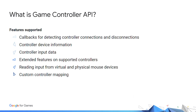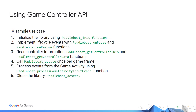What features are supported by the Game Controller API? It supports callbacks for detecting controller connections and disconnections. It supports getting controller device information, including button style and layout. It supports controller input data standardized around a dual-stick controller model design. It supports extended features for controllers including vibration, lights, motion sensor data, and battery status. It also supports reading input from virtual and physical mouse devices and the ability to specify custom control mapping data for particular devices. A typical use case includes: calling init functions, implementing lifecycle events with onPause and onResume, reading controller information using getControllerInfo and getControllerData, calling the update function once per game frame, processing events using the processGameActivityInputEvent function, and closing the library with the destroy function.